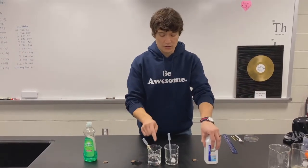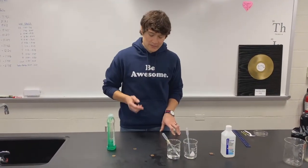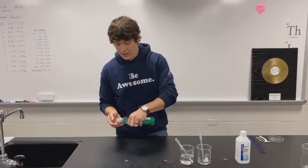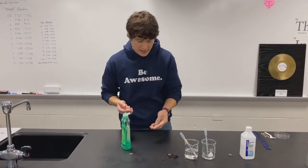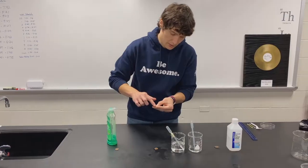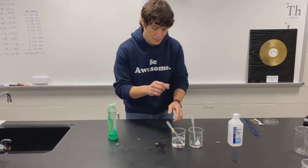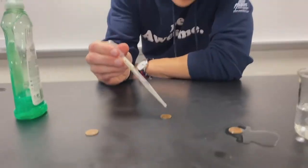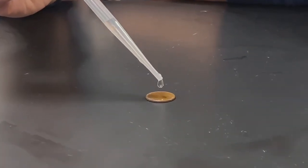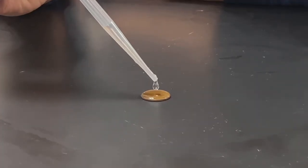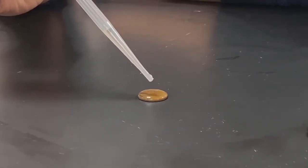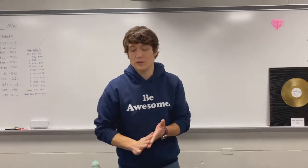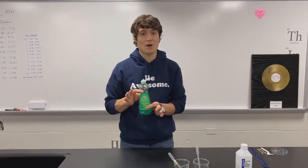Now we're going to run the exact same test except I'm going to put some dish soap on the penny, and we want to see what happens. I'll smear a little bit on there and now go back to the water to see how many drops I can get. One, two, three... I got only eleven drops before the surface tension was broken when I used dish soap. We'll talk about why in class.